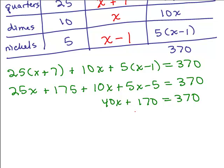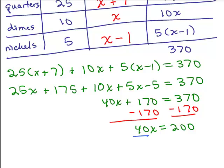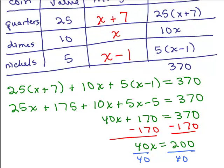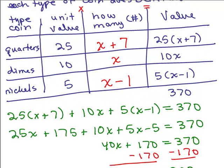All right. So I've simplified the left-hand side. Now we can subtract 170 from both sides to get the variables on one side and constants on the other. And finally, divide both sides by 40 to solve for X, 5. Now, what did X stand for? X stood for the number of dimes.